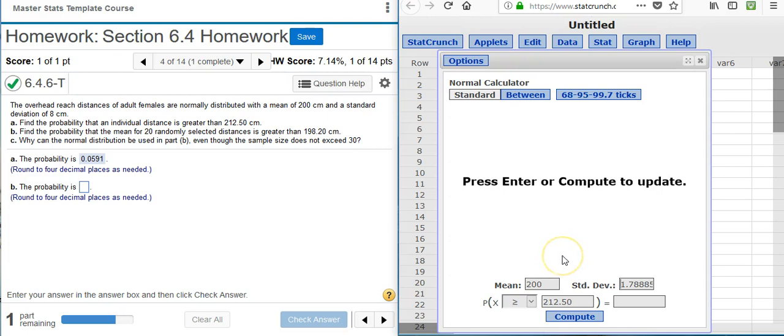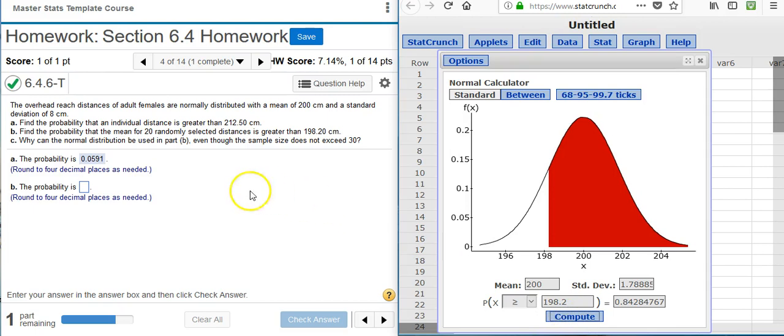Now all I need to do is make the appropriate adjustment to my random variable value. Here in the problem statement, we want the probability that the mean of 20 randomly selected distances is greater than 198.2. So I make that adjustment here, press Compute and out comes my probability.